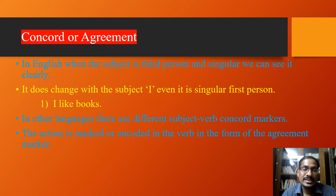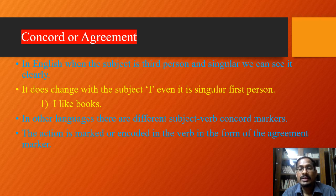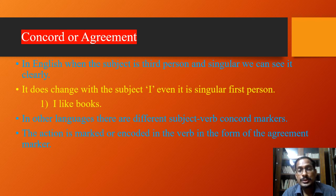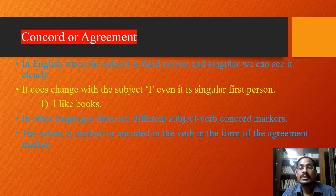In other languages, there are different subject-verb concord markers. In English we have suffixes like -s or -es, but in other languages we may find different kinds of markers. In a language where there is a strong bond between subject and verb, the action is marked or encoded in the word in the form of the agreement marker. So even without an explicit subject, we can understand the action from the sentence. This whole phenomenon is called subject-verb concord.